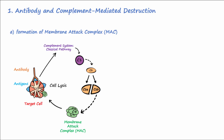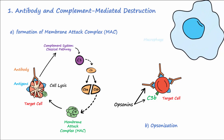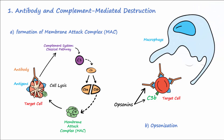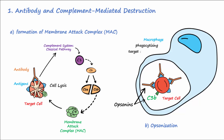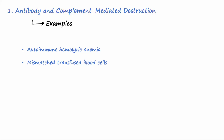The second way antibody and complement-mediated destruction is accomplished involves opsonization. Antibodies and the complement protein C3b attach to the target cell and act as opsonins, meaning they attract macrophages to come and phagocytose the target cell. Type 2 reactions involving this mechanism include autoimmune hemolytic anemia, mismatched transfused blood cells, erythroblastosis fetalis, and Goodpasture syndrome.